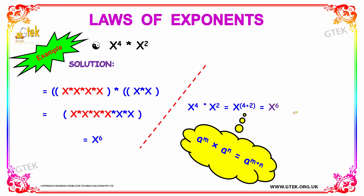Let's see another example: x to the power 4 into x squared. In the general way, we multiply x into x into x into x, multiplied by x into x, and on multiplying we get x to the power of 6. But in terms of exponential law, base a to the exponent m into base a to the exponent n equals base a to the exponent m plus n. By applying this logic, we get x with exponent 4 plus 2, which equals x to the power of 6.